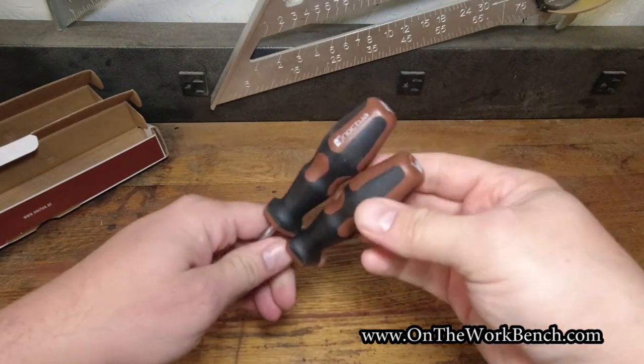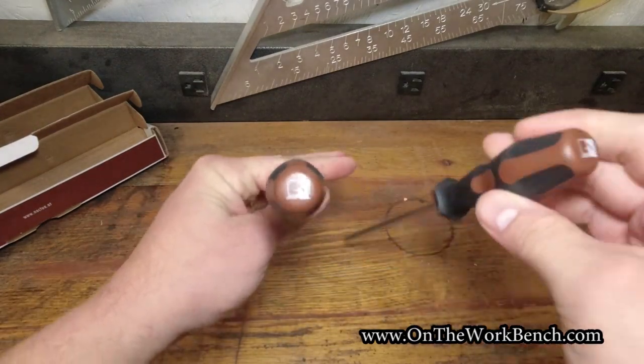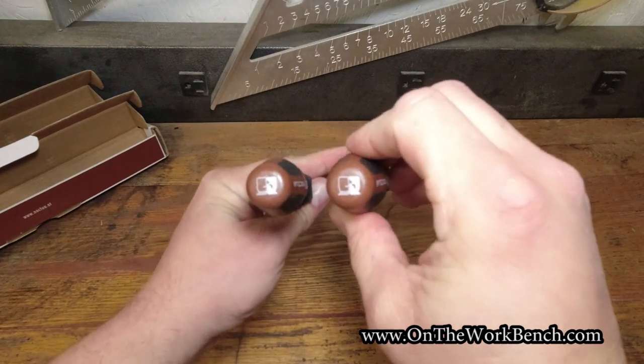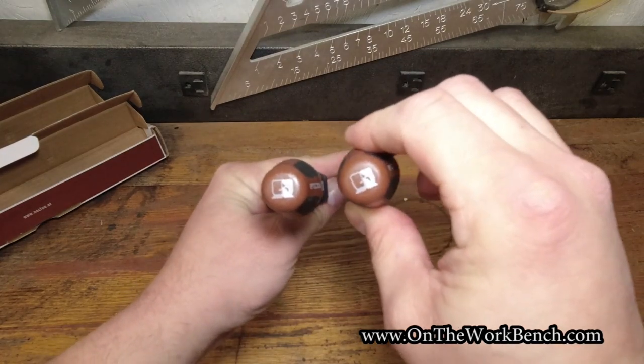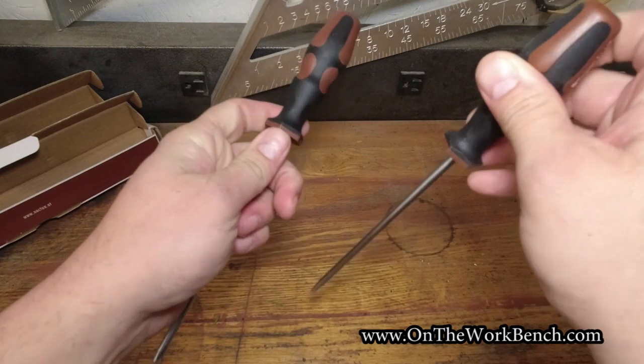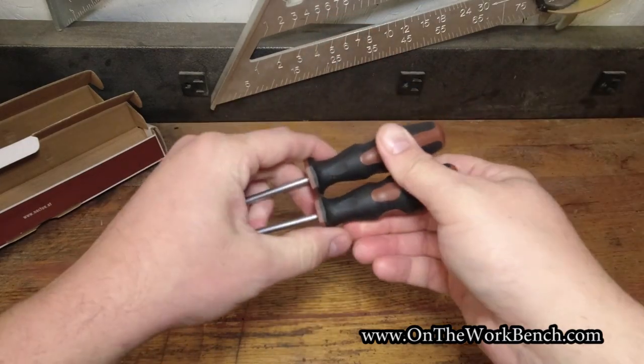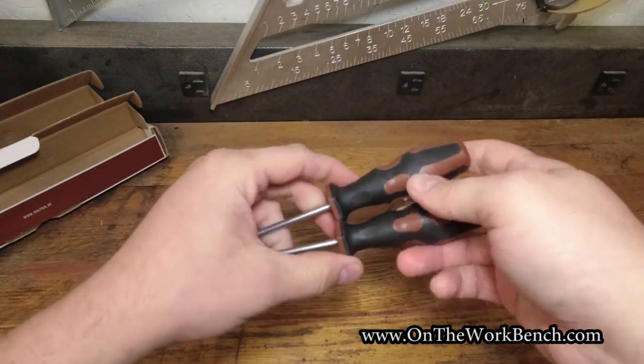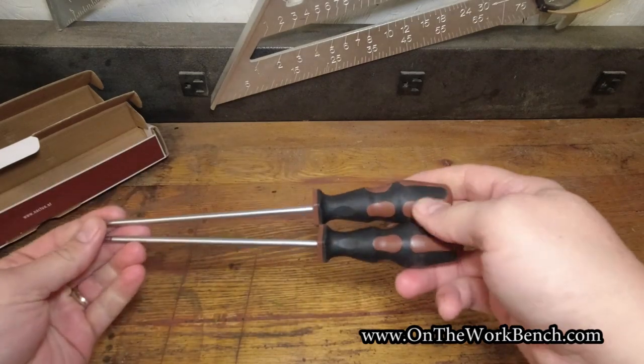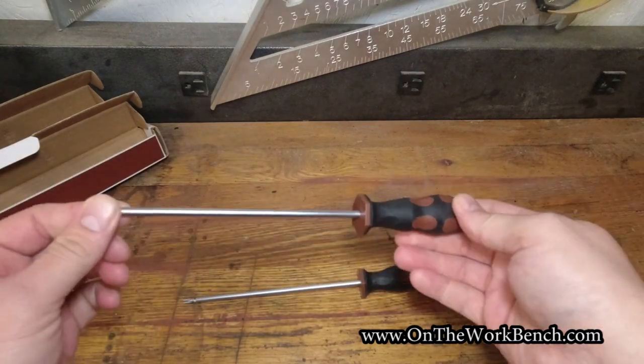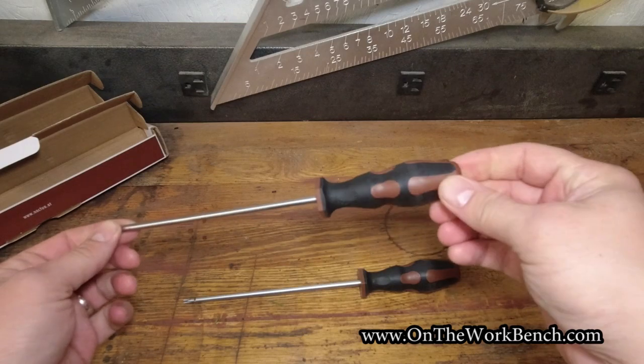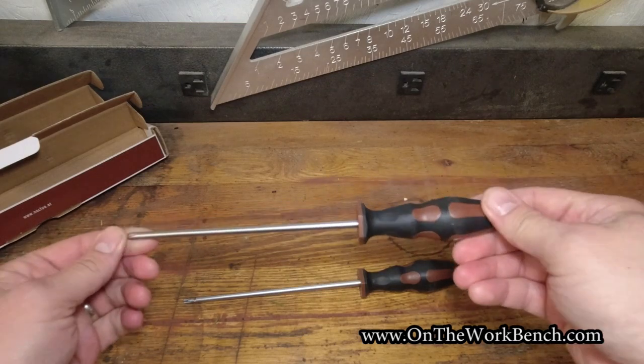So both of these screwdrivers have a six-sided handle. Noctua logo at the top. So there's no obvious indication at the top for what size screwdriver you've got or what variety it is. And if we look at these, one of the first things I see when looking at these is this handle grip here.